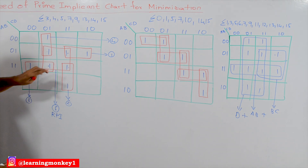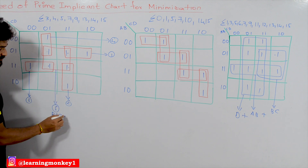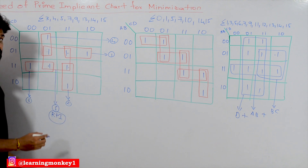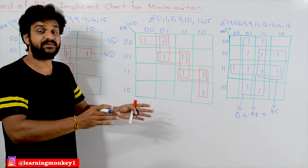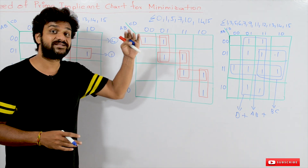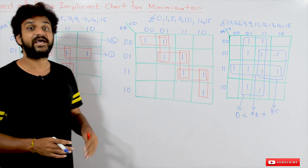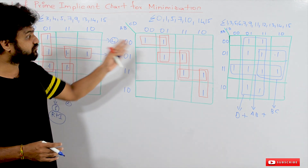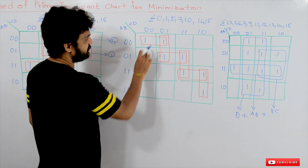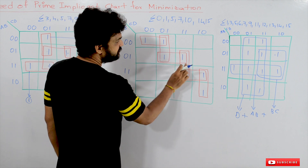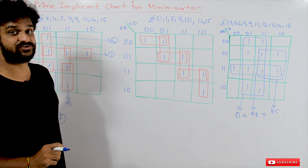But there are some examples where we cannot easily decide which prime implicant to choose and which to eliminate. Let us go to this example. In this example, how many prime implicants are there? There are 6 prime implicants.